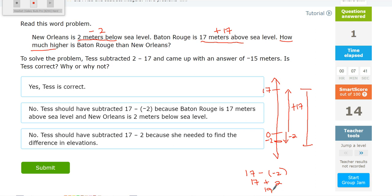Why does that make sense according to the diagram? Well, because if this is sea level right here, if from Baton Rouge back to sea level was 17, and from sea level down to New Orleans was 2, the total distance would be 17 plus 2, which again should be 19.